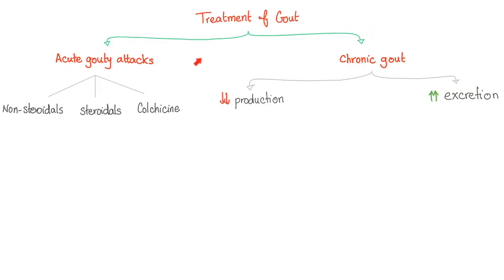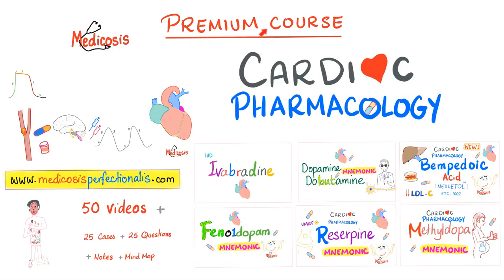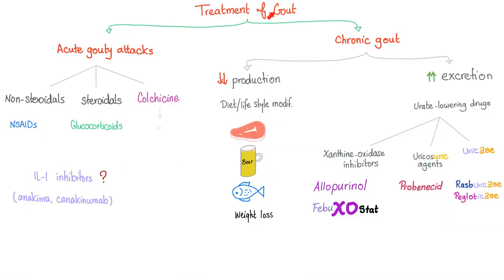For acute gouty attacks: non-steroidal anti-inflammatory drugs, because gout is an inflammation; steroidals, because gout is an inflammation; and colchicine. For chronic gout, we try to decrease production of uric acid and increase excretion of uric acid. Remember that gout patients are either overproducers or under-excretors, so you do the opposite to treat it. These are pain medications and are also anti-inflammatory.